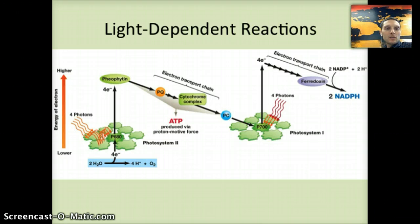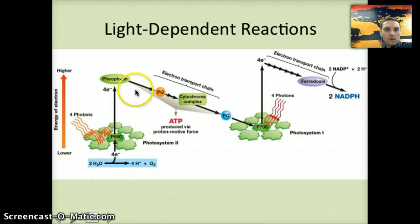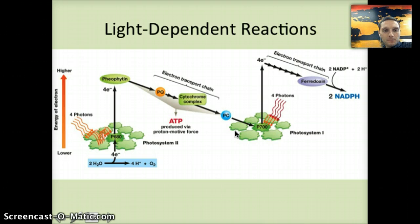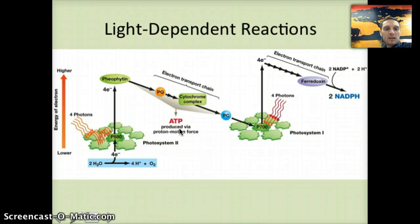Once those electrons are at a higher energy level, they move through — within the membrane of the thylakoid — a number of enzymes. The thylakoid are the silver dollar or pancake-like stacks within the chloroplast. Within the membrane of those thylakoids, the electrons move through an electron transport chain very similar to what we saw in cellular respiration, and through this process produce ATP in the same manner as during cellular respiration.